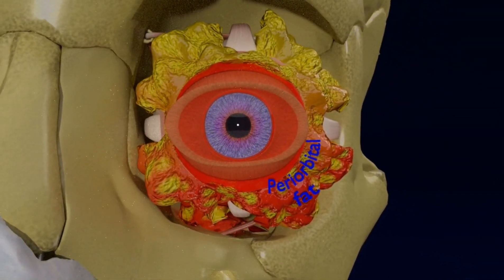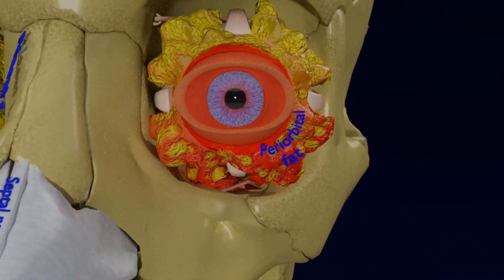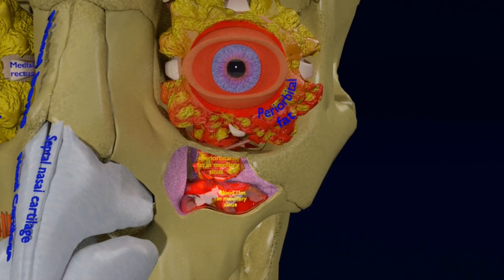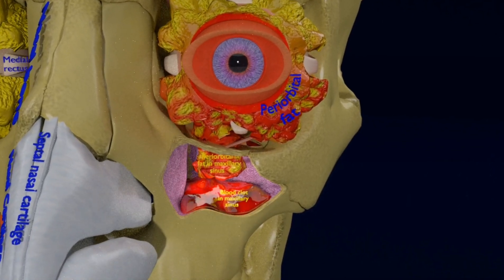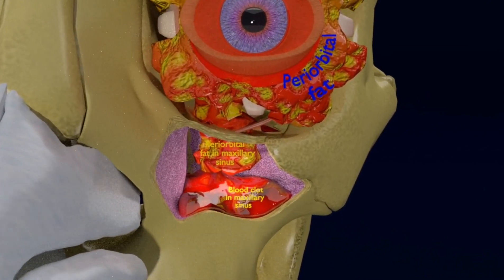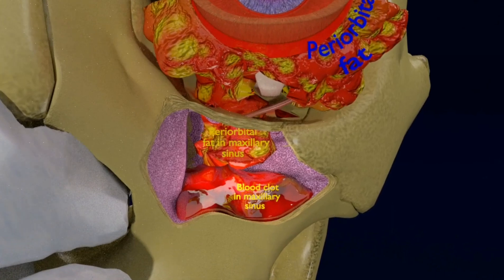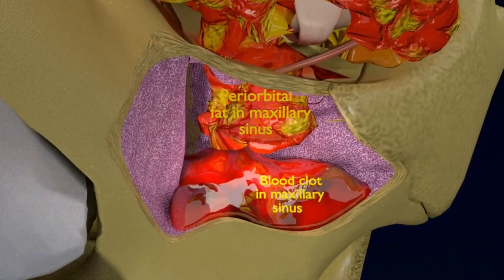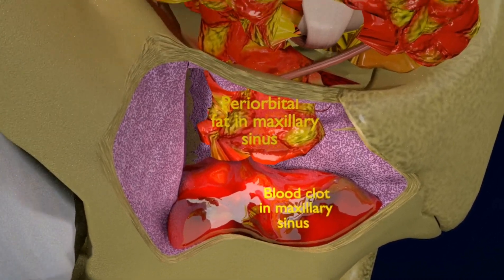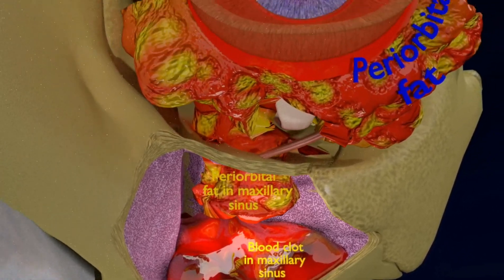For you to see the maxillary sinus, we are going to expose it, and you can very well see the blood clots, connective tissue, fat, orbital muscles, and periorbital hemorrhagic fat in the maxillary sinus.